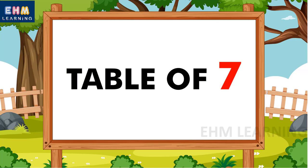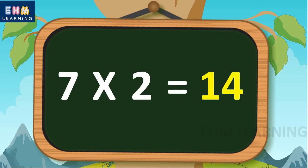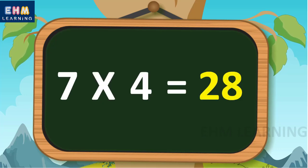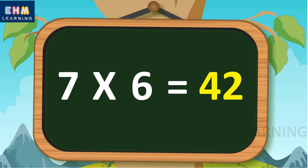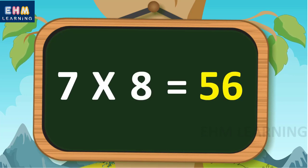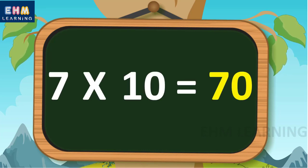Table of seven. Seven ones are seven, seven twos are fourteen, seven threes are twenty-one, seven fours are twenty-eight, seven fives are thirty-five, seven sixes are forty-two, seven sevens are forty-nine, seven eights are fifty-six, seven nines are sixty-three, seven tens are seventy.